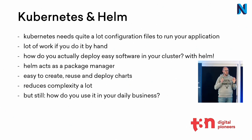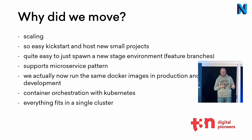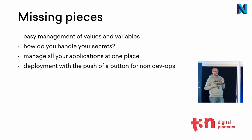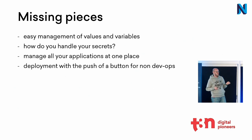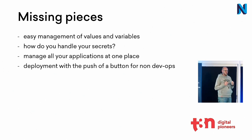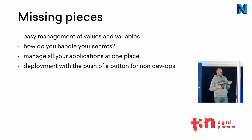We don't want every developer to go on the CLI and run a command to deploy a piece of software, because you also have to provide a values YAML file. We have Kubernetes, we have Helm — is it enough for daily business? For us, not really. We have some missing pieces: easy management of values and variables, you need a different set of variables for staging versus production. How do you handle secrets? You don't want to commit secrets to a repository. You want to inject them, not commit them. We wanted to manage all applications in one place, not spread over different Git repositories, and we wanted product owners or developers to be able to deploy with a push of a button.